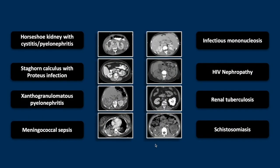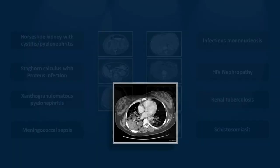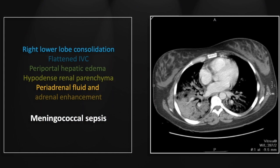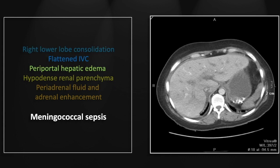Our next case is of meningococcal sepsis — a highly unusual case that fortunately was called correctly by our radiologist in real time. There is blatant right lower lobe consolidation consistent with a severe pneumonia. Lower down there is thinning and flattening of the IVC consistent with profound hypotension.